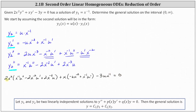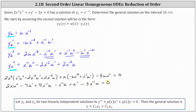Now we clear the parentheses by distributing two x squared and distributing x. This gives us two x·u double prime minus four u prime plus four x to the power of negative one times u. Then distributing x, we have negative x to the power of negative one times u plus u prime. The last term is minus three x to the power of negative one times u, equals zero. Combining like terms: one u double prime term gives two x·u double prime; the u prime terms give negative four u prime plus u prime, which is minus three u prime; and the u terms — four x to the negative one minus x to the negative one minus three x to the negative one — simplify to zero. So the differential equation simplifies to two x·u double prime minus three u prime equals zero.